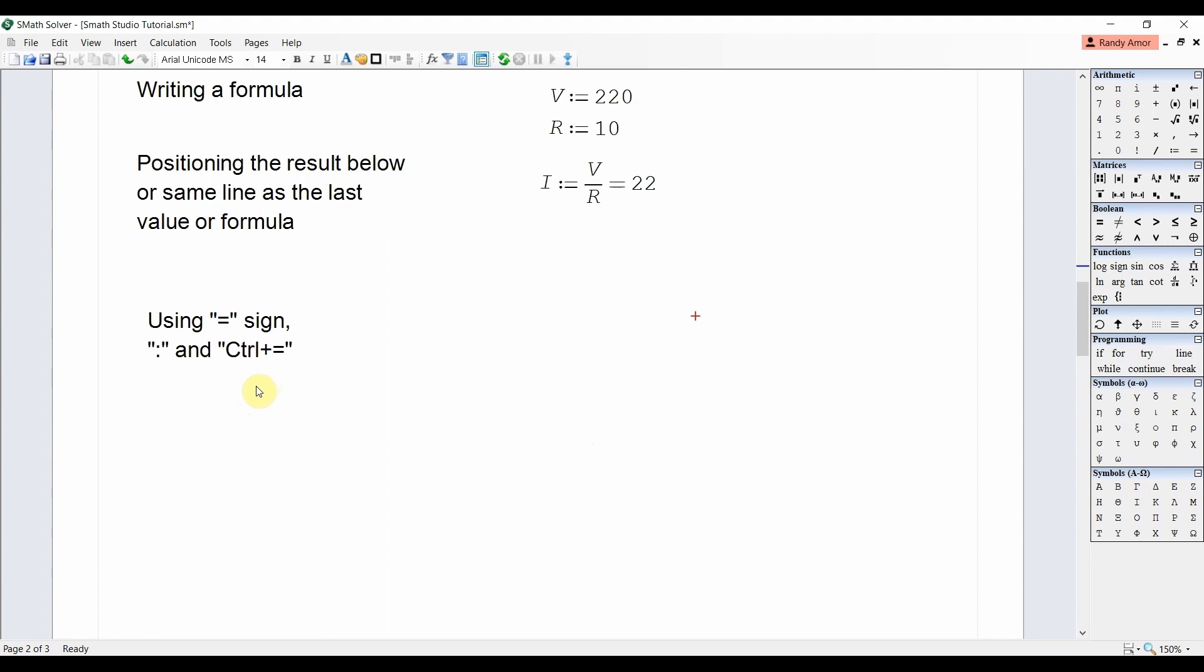Aside from assigning new values to a variable, the colon key is also used in writing different formulas to calculate for the same quantity. Let's say, for example above, we wish to calculate the power using the three formulas. That is, power in terms of voltage and current, power in terms of voltage and resistance, and finally power in terms of current and resistance. First, let us use the formula P is equal to voltage times current. Type P equals V times I. Because we already have the values for V and I above, typing equals after the formula will give us the answer.